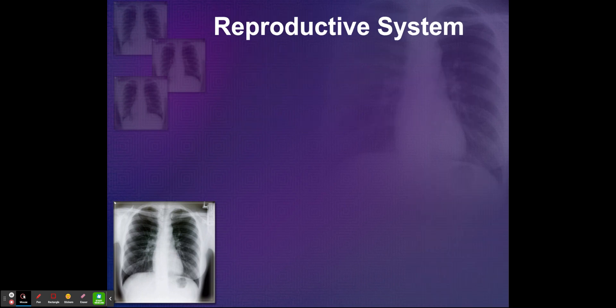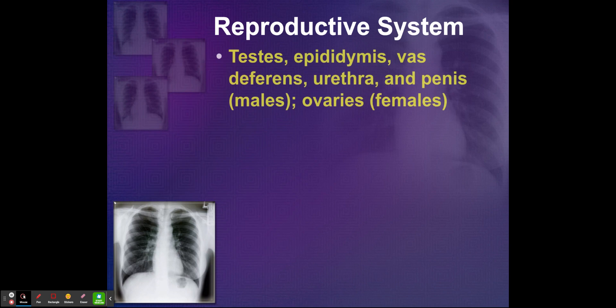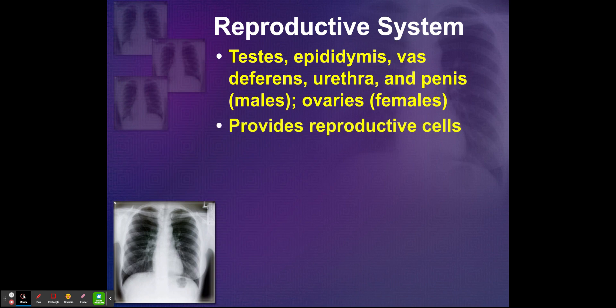You have your reproductive system, which includes the testes and ovaries, and the penis and uterus for males and females. It provides reproductive cells.